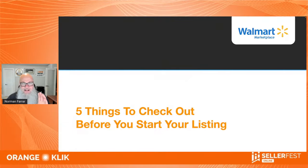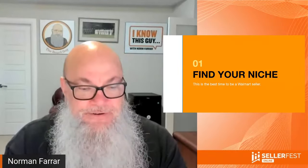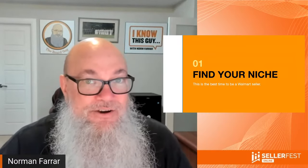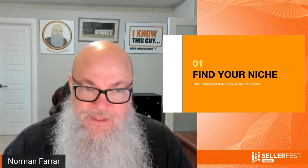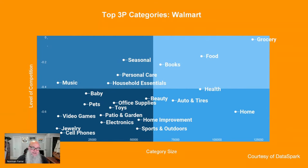There are five things to check before you start your listing. First, find your niche. Walmart is different from Amazon — something popular on Amazon might be a dud on Walmart, or vice versa due to different demographics. DataSpark showed us the best-looking niches, and grocery, food, and health are standouts.